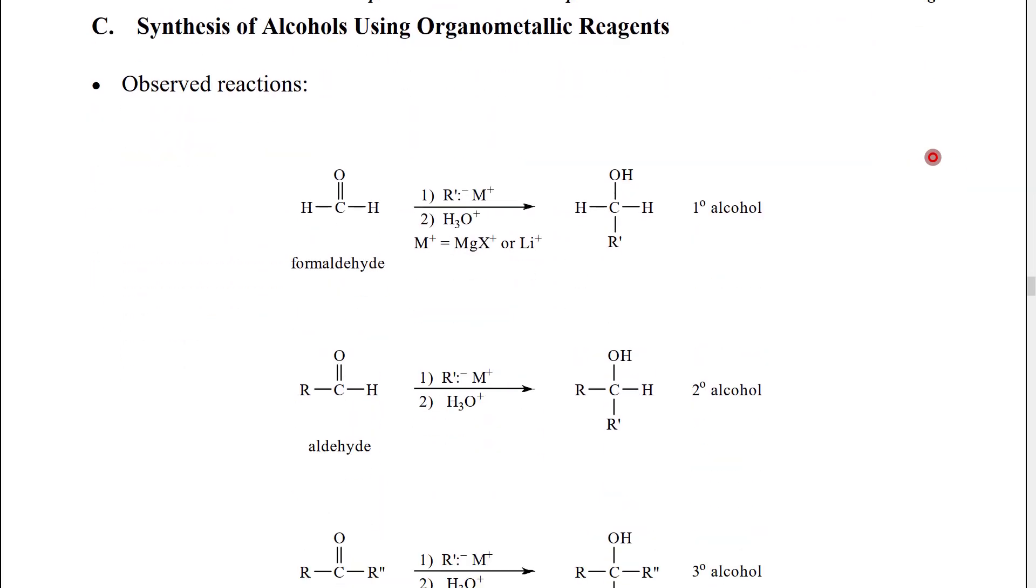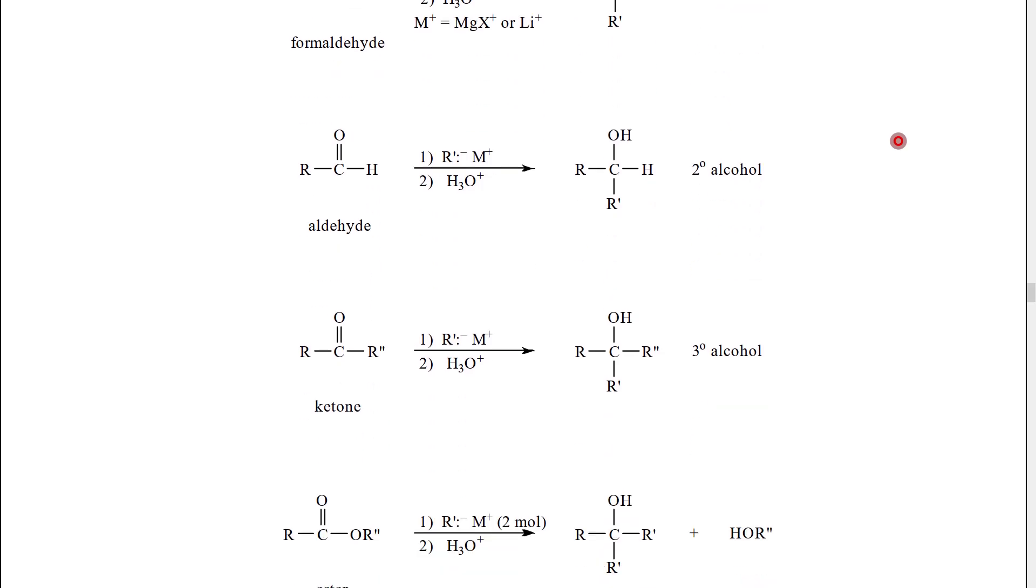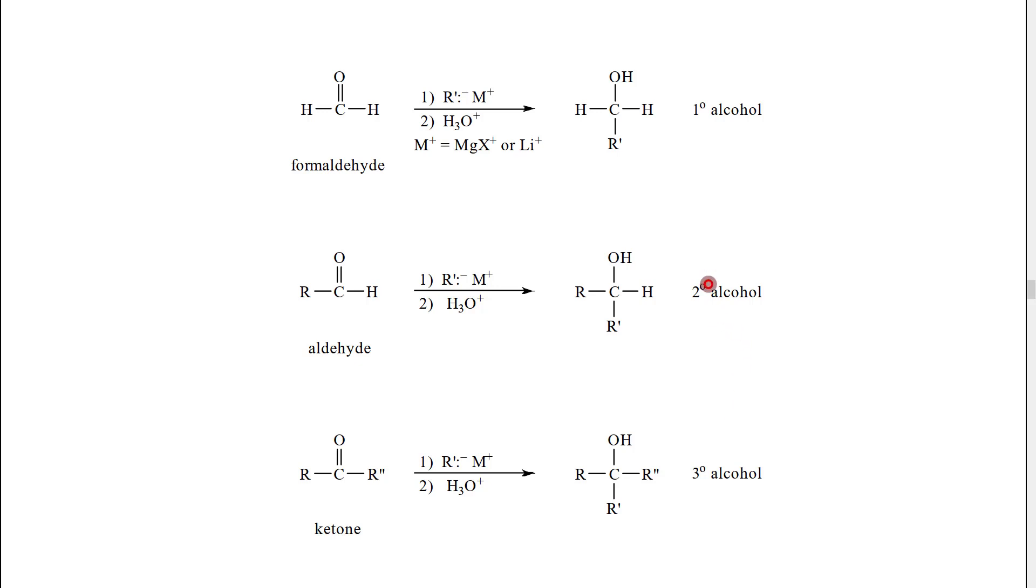We're now going to look at how we can use organometallic reagents to synthesize alcohols. When you look at this section, I caution you to pay attention to the little marks, what we call primes, on our carbon symbols R. Those marks are there to very clearly indicate that one carbon group does not have to be identical to another carbon group. We're first going to look at four observed reactions overall. We can react organometallic reagents with aldehydes or ketones. Aldehydes and ketones are actually very similar molecules in their structure, the main difference being the number of hydrogens that are directly attached to the carbonyl carbon.